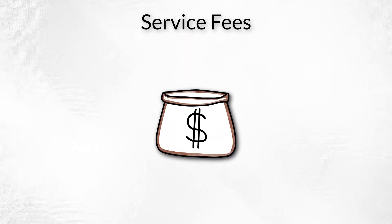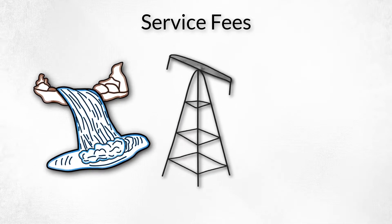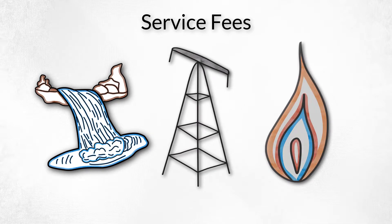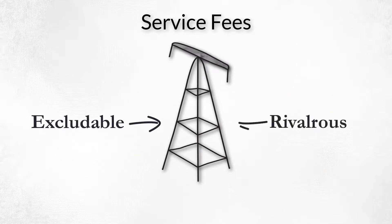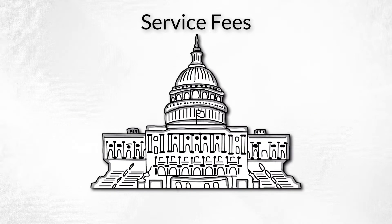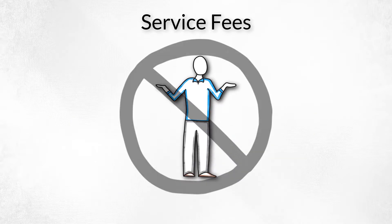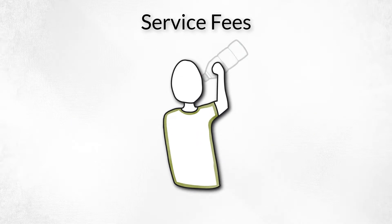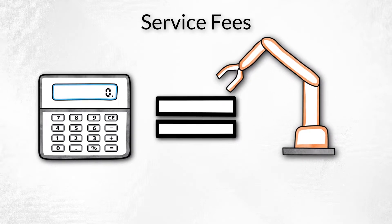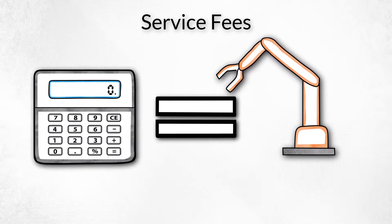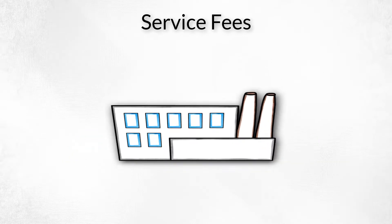Service fees are used to provide private goods such as water, electricity, and natural gas. Private goods are excludable and rivalrous, meaning the government can exclude a person from consuming them, and one person's consumption prevents another from consuming the good. A service fee's rate is tied to the cost of providing the service.